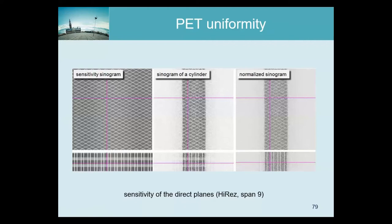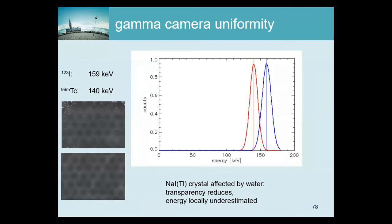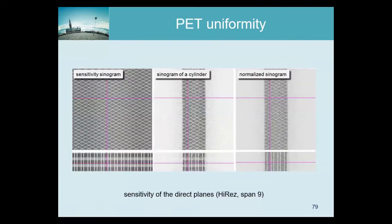This was about uniformity of a gamma camera. As I said, if all goes well it should be nice and uniform. In a PET camera that's very different — here is a PET camera image where all is going well and it's not uniform at all. The reason is that the PET is pixelated and the performance of these pixels is position dependent.